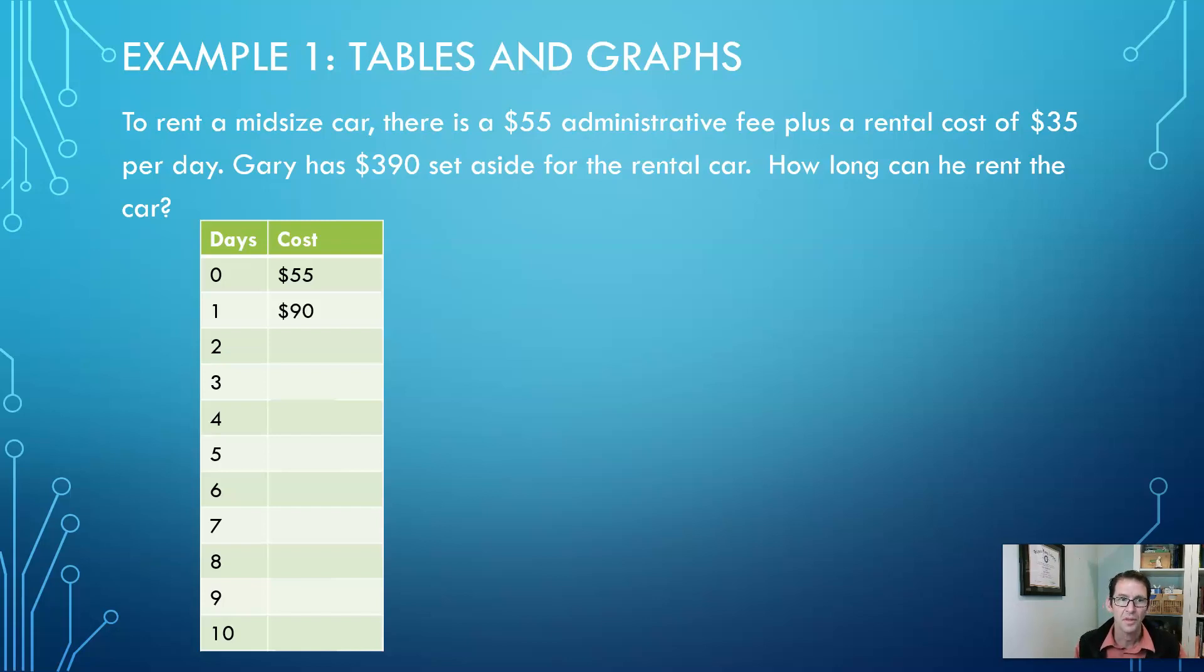And so then we'll just keep adding $35 for each day, and we're just looking for the part where we hit $390. So it looks like we actually don't have an even number of days. We have nine days for $370 and then 10 days is $405. So in reality, Gary would get to keep the car for nine days and he has a little bit of change.